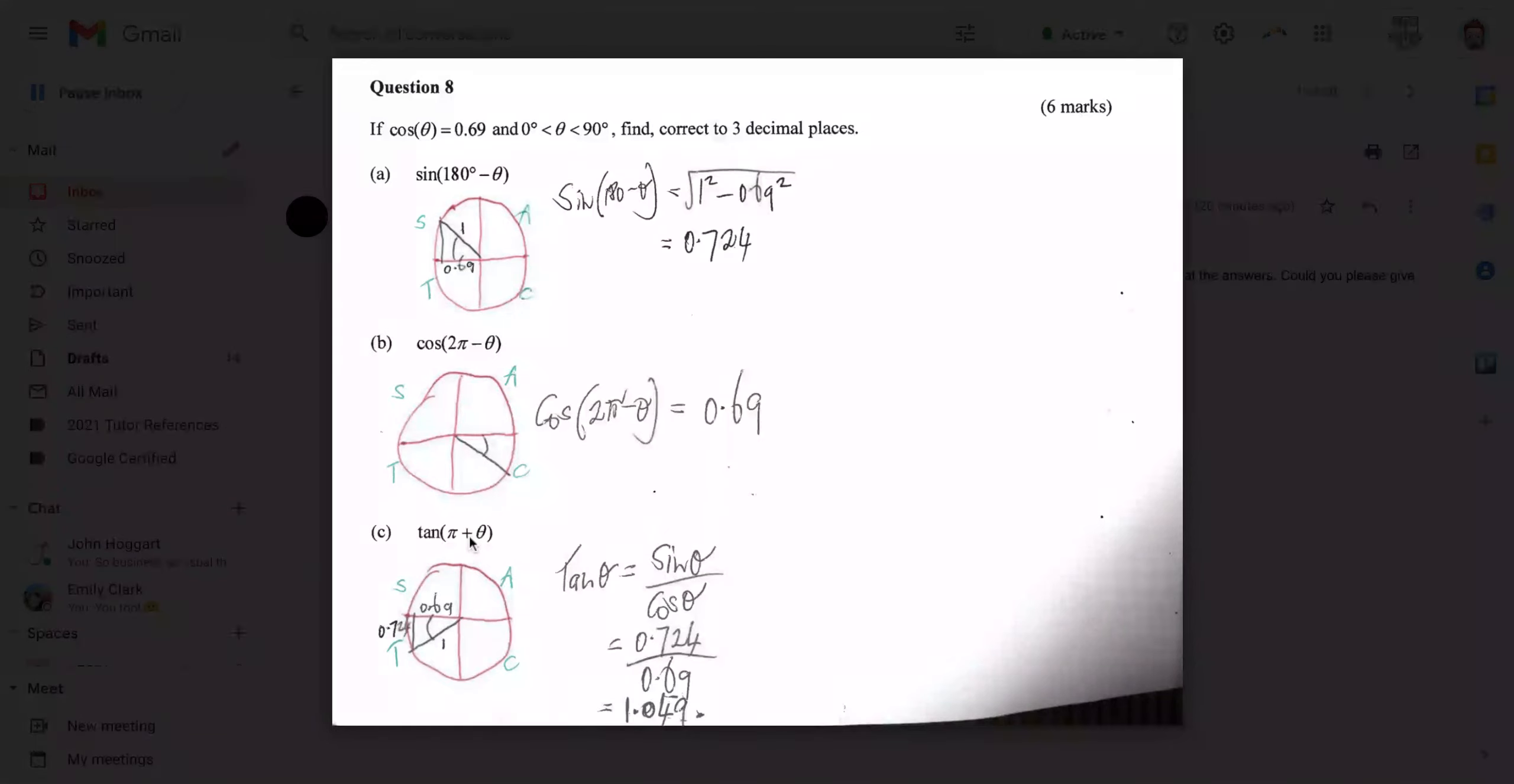For tan pi plus theta, again, we're going all the way around to pi or 180 degrees plus another angle of theta. And so we end up with our angle being in here. Ignore what's going on here in the diagram. So just use the trig identity, that tan equals sin on cos. And we know tan has to be positive to end with because it's in this quadrant. Sine is 0.724. Cosine is 0.69. And so if we divide that one by that one, we get 1.049. And that's how we do it.